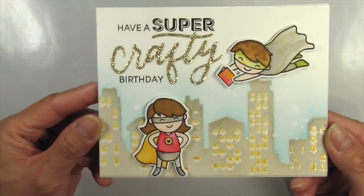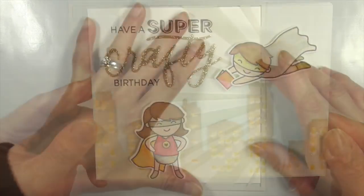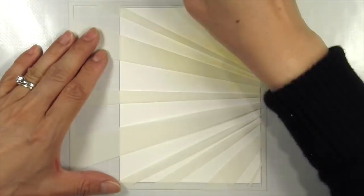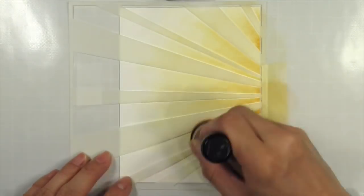Now onto my second card. Since the images are already colored and die cut I can go straight to the background. This time I'm using the raise the roof stencil and sponging a sunset type of background across the entire card.